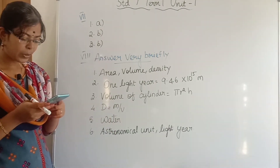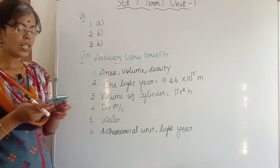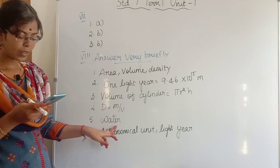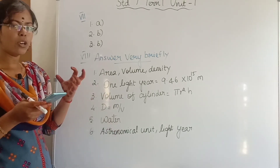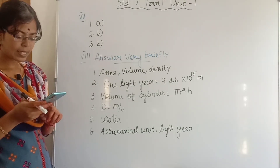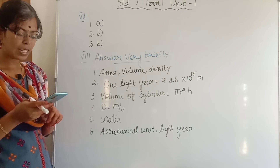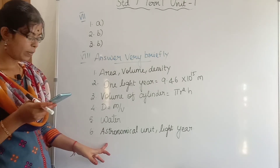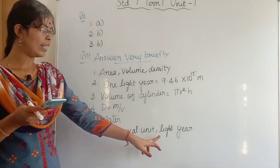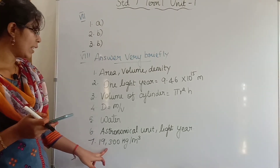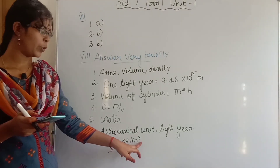Fifth question: name the liquid in which an iron ball sinks. Iron ball sinks in water because its density is more than water. Sixth question: name the units used to measure the distance between celestial objects. The units are astronomical unit and light year. Seventh question: what is the density of gold? It is 19,300 kilogram per metre cube.